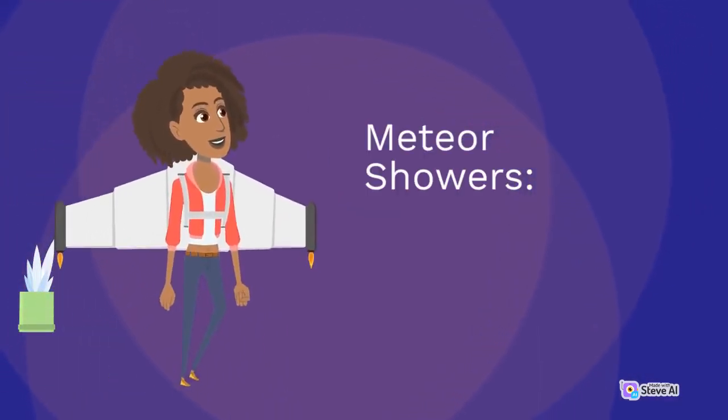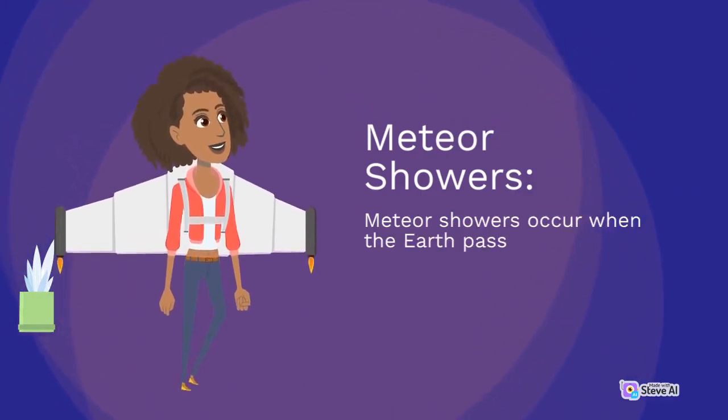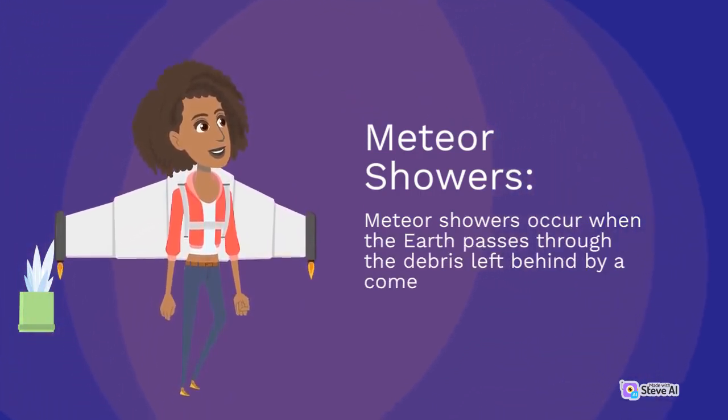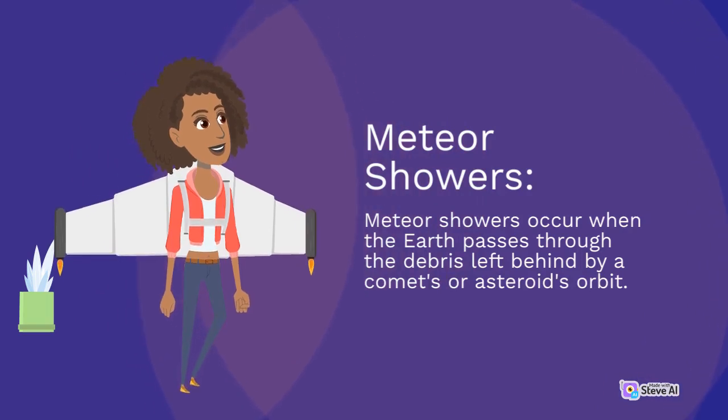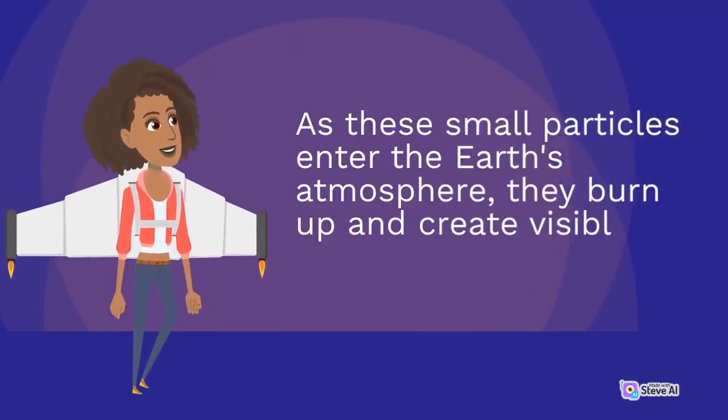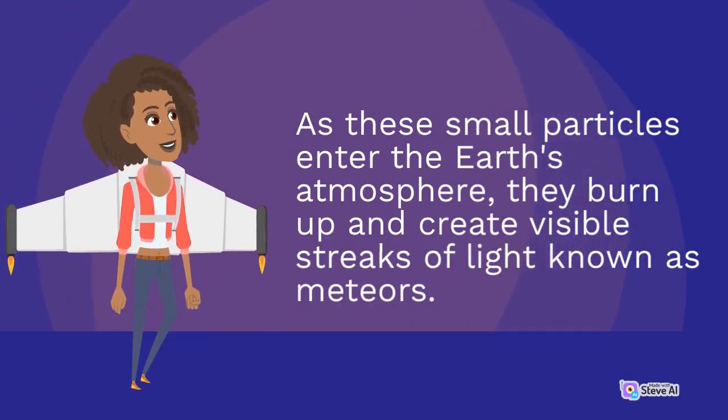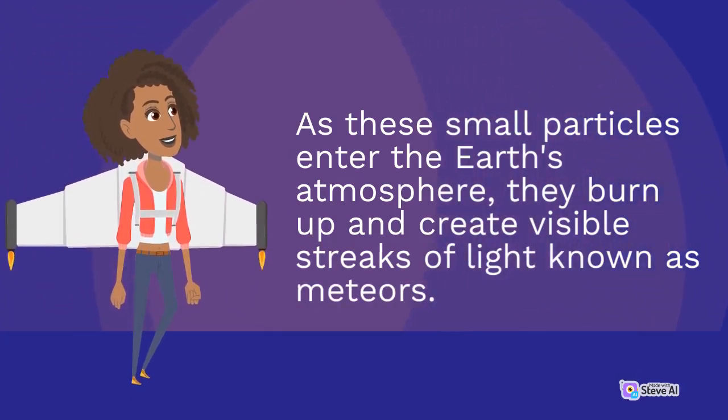Meteor showers occur when the Earth passes through the debris left behind by a comet's or asteroid's orbit. As these small particles enter the Earth's atmosphere, they burn up and create visible streaks of light known as meteors.